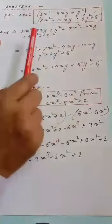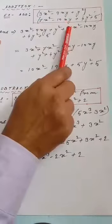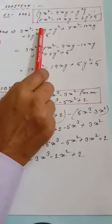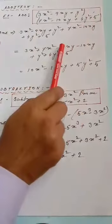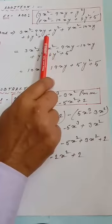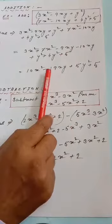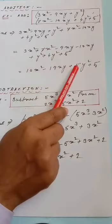First, arrange by like terms: 3x² + 7x² gives 10x². Then −9xy − 10xy gives −19xy. Then y² + 4y² gives 5y². The constant term is 5. So the final answer is 10x² − 19xy + 5y² + 5.